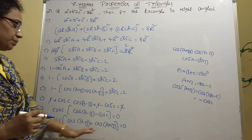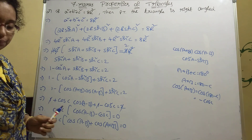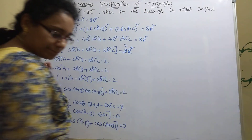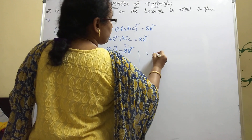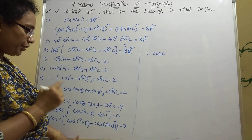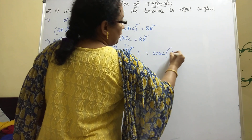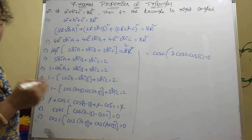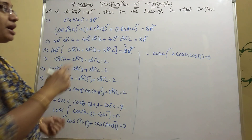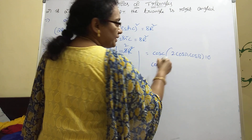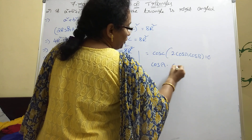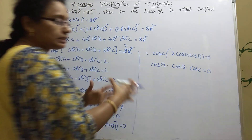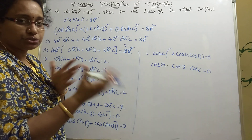We know that cos(A−B) + cos(A+B) = 2cosA·cosB. So the equation becomes: cosC·2cosA·cosB = 0, which simplifies to cosA·cosB·cosC = 0.